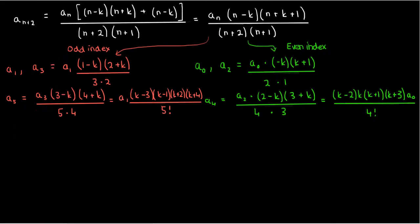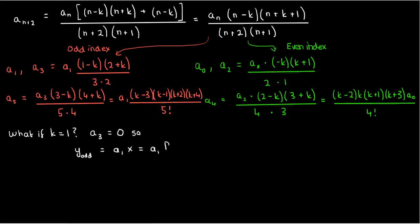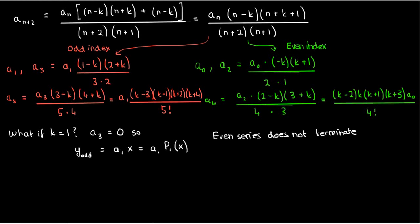In many Legendre ODE problems, k is usually a positive integer. If k equals 1, the odd series terminates immediately at a₃ because of the 1 minus k factor, which becomes 0. All subsequent coefficients a₅, a₇, etc., also become 0 since they depend on a₃. So the odd solution when k equals 1 is y_odd equals a₁ times x, written as a₁ times P₁(x). The even series, however, doesn't terminate for k equals 1.